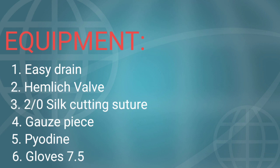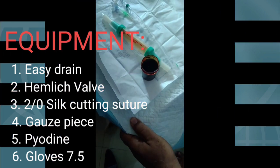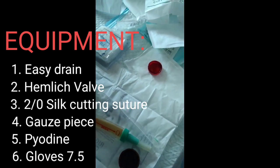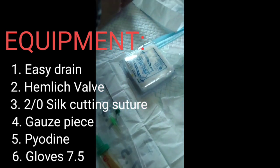Equipment: easy drain, Heimlich valve, 2-0 silk cutting suture, gauze piece, pyodine, and gloves.